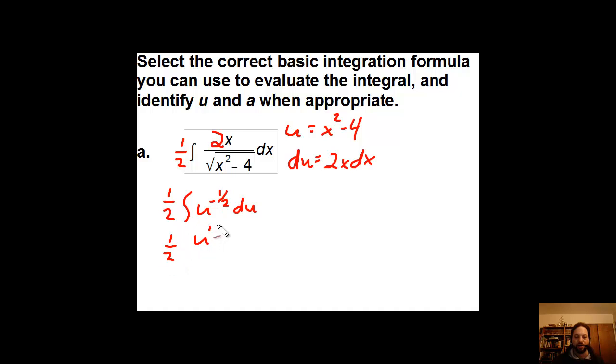That shouldn't be too hard of an integral to calculate. It'll just be one half u to the positive one half over one half plus c. The one halves are going to cancel out, leaving us with just u to the one half, written differently as the square root of x squared minus 4 plus c.